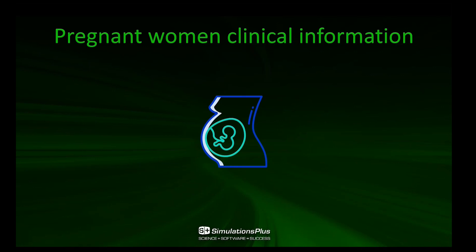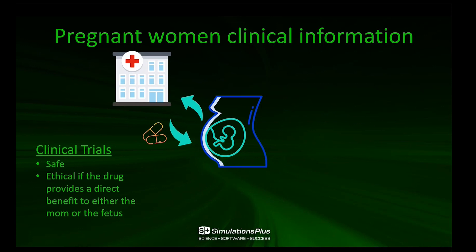Before we talk about the model by itself, I would like to discuss how currently clinical information is obtained for pregnant women. For some drugs, the first situation is that a clinical trial is performed to evaluate the safety and efficacy of the drug in the pregnant populations. Those clinical trials are done in a safe environment, but they can be done, ethically speaking, only if the drug provides direct benefit to either the mom or the fetus.